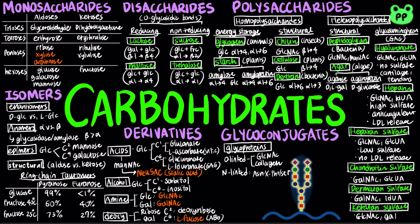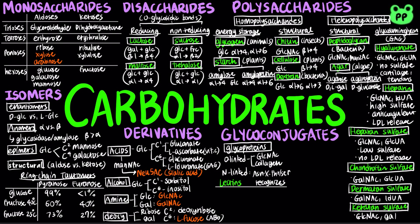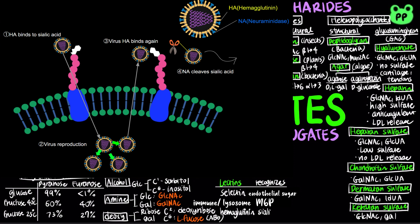Lectins are glycoproteins that recognize specific sugar groupings. Oligosaccharide ligands present on endothelial cells will bind to lymphocytes expressing L-selectin. Mannose-6-phosphate is a molecule bound by lectin in the immune system and is also a targeting signal for transport to lysosomes. Hemagglutinins are glycoproteins which cause red blood cells to aggregate. Hemagglutinin is also responsible for binding influenza virus to sialic acid on the surface of target cells, causing internalization of the virus.